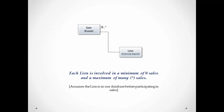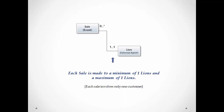Let's take the lion (external agent) and the sale event. For each lion, that lion is involved in a minimum of zero sales and a maximum of many sales — this assumes that the lions are in our database before participating in any sale. Working the other way, for each sale there is a minimum of one lion and a maximum of one lion. Each sale involves only one customer.